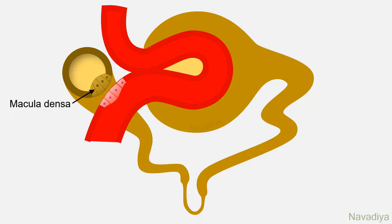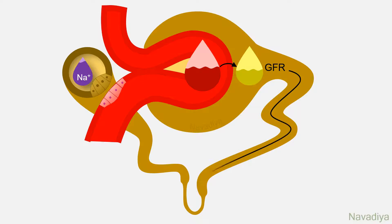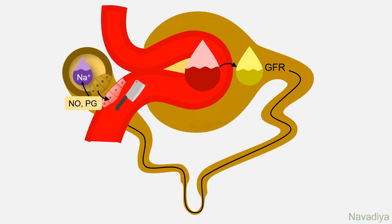The second detector is macula densa cells. These cells are sensitive to sodium concentration in the lumen. When there is a fall in blood volume or pressure, there will be a fall in GFR. This results in a decrease in sodium concentration at the macula densa. Macula densa cells detect this fall and release nitric oxide and some prostaglandins, which act on juxtaglomerular cells and cause renin release.